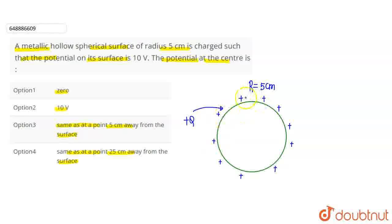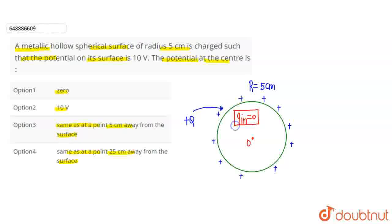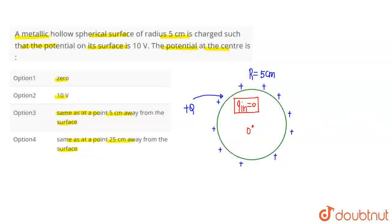We can say that we have a hollow spherical conductor with a given radius, with the center point being hollow. When you charge the outer surface, the charge is equally distributed. At any point within, the charge will be zero. So the inner charge is zero, and we can ask: what is the potential at the center?